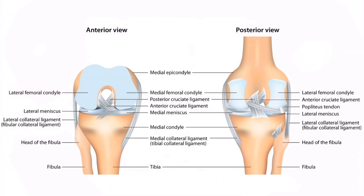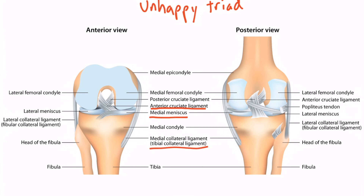Before we finish, I'd like to mention one more disorder that's a combination of many of the injuries we've discussed. It's called the unhappy triad. In this condition, the ACL, MCL, and medial meniscus are most often injured. It most commonly occurs as a contact sports injury due to lateral force applied to the knee while the foot is planted.